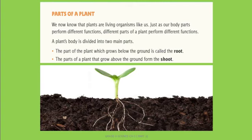The second part consists of the parts of the plant that grow above the ground. Above the ground means upward from the ground — the part which we can see. This portion is called the shoot. So below the ground it is the root, and above the ground it is the shoot.